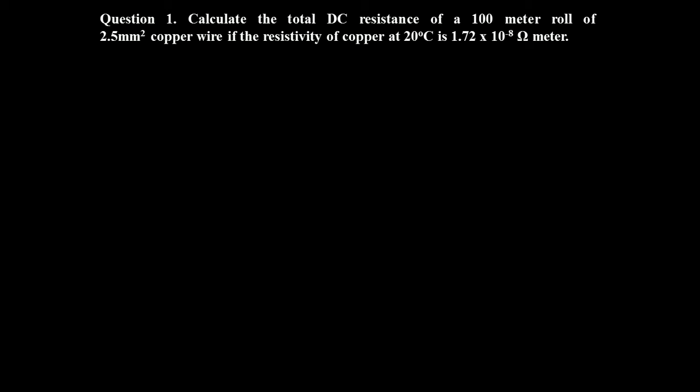Here is a question: calculate the DC resistance of 100 meter roll of 2.5 mm² copper wire. The resistivity of copper at 20°C is 1.72 × 10⁻⁸ ohm meter.